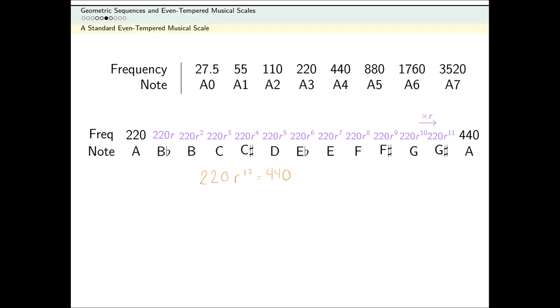To go from G-sharp to A, we should multiply 220R to the 11th times R. So A should be 220R to the 12th, but it should also be 440.